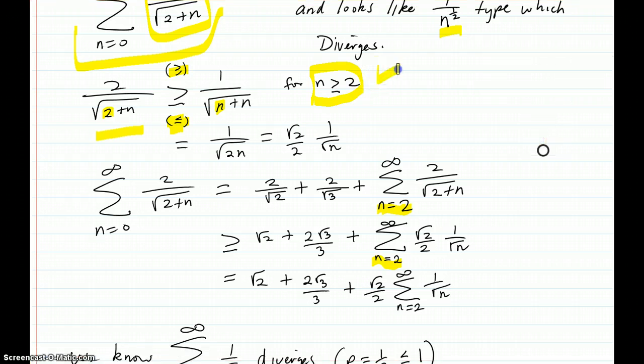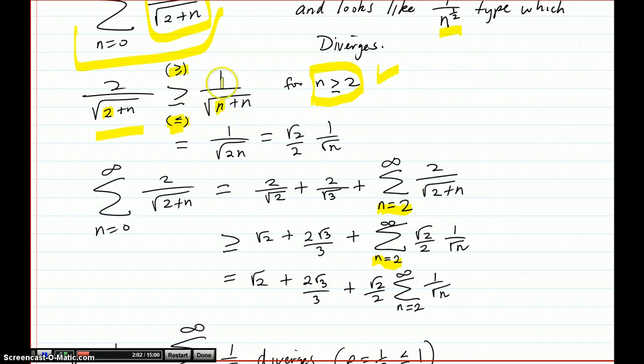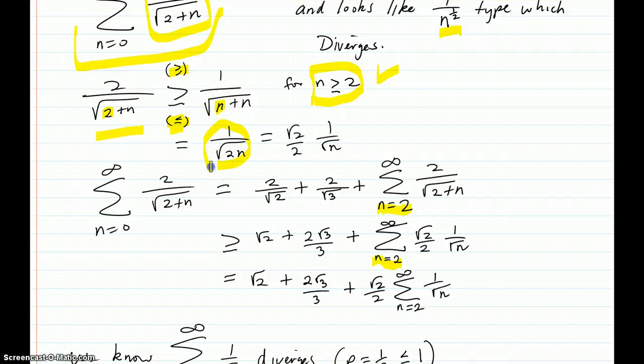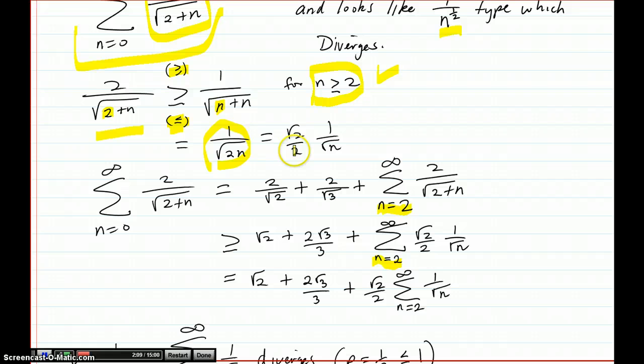So as long as this is preserved, then I have that this inequality holds, and of course that's equal to 1 over the square root of 2n, which is square root of 2 over 2, rationalizing the denominator, 1 over the square root of n. So now I'm here.